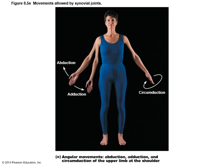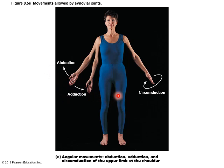Pay attention to abduction and adduction — there's only one letter difference. Abduction is taking the arms away from the side of the body, bringing them out laterally — like abducting someone, taking them away from the midline. Adduction is adding to the midline, bringing the arms down closer to the body. If you put the arm out and transcribe a cone in space, that's circumduction.